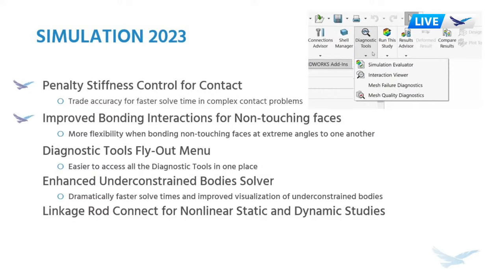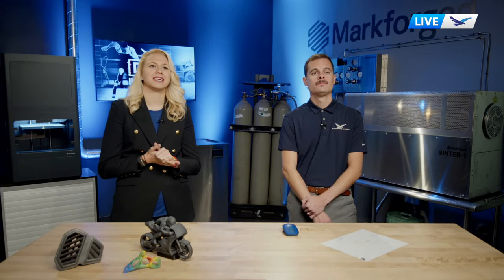The other enhancement related to this is that bonding interactions are also improved for what they call non-touching faces or non-parallel faces — faces can actually be at an angle to each other to a certain threshold and it's still able to recognize that as the bonding interaction with gaps. Interactions are always one of the things that take the most time in simulation — setting them up and especially solving it. So being able to prioritize a load transfer area is really valuable. We're always trying to fight the battle of accuracy versus solve times.